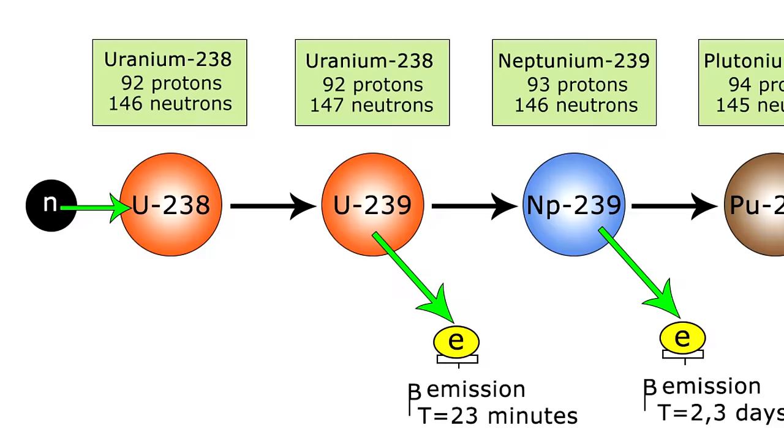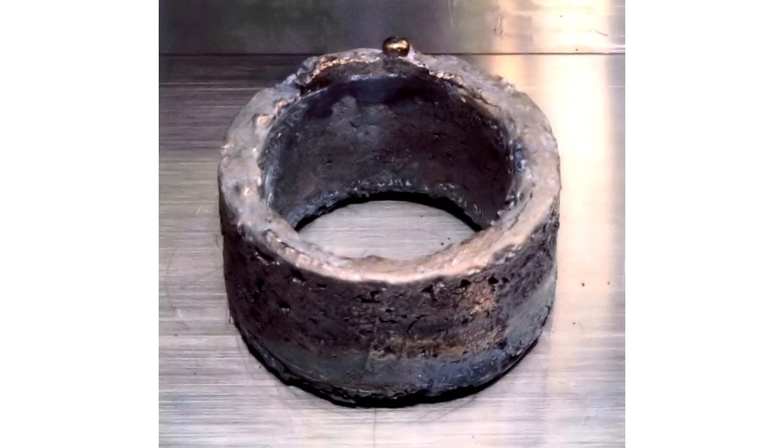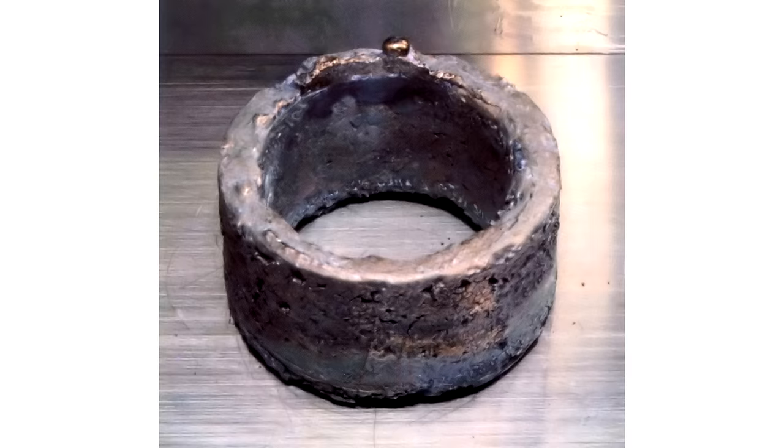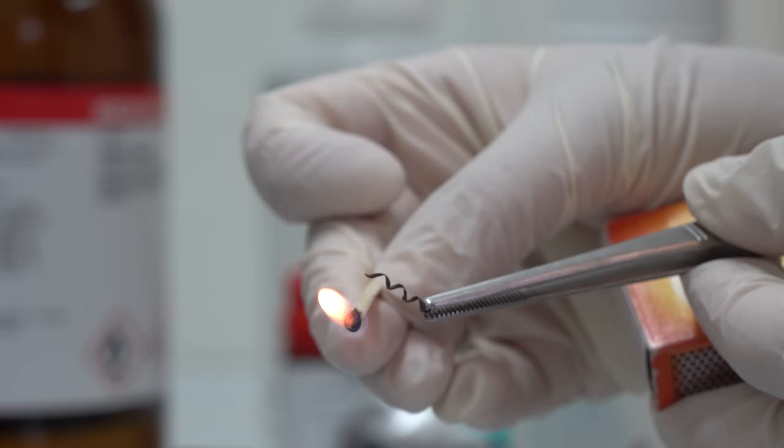Besides, in a nuclear reactor, uranium-238 can be turned into plutonium-239 by irradiation with slow neutrons. It is known that plutonium-239 is fitting for making implosion-type atomic bombs, because its critical mass is smaller.